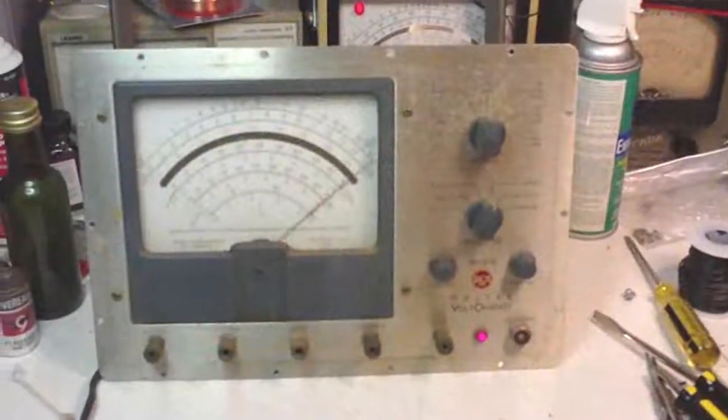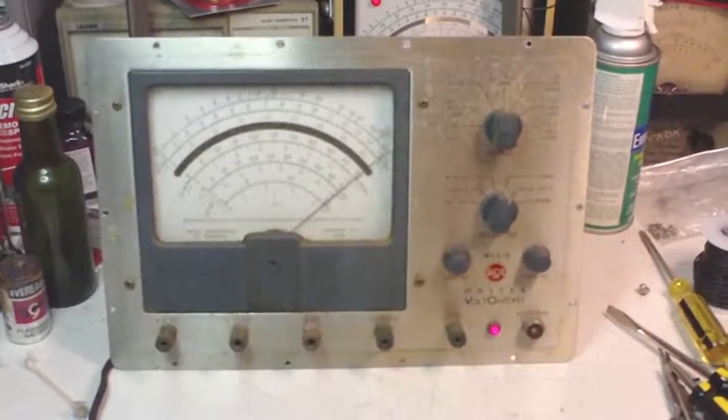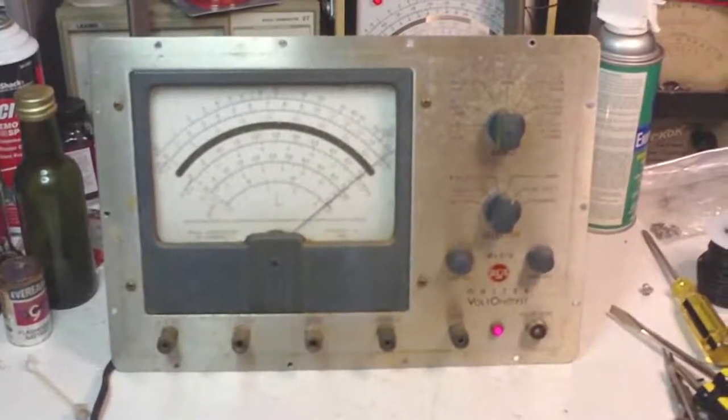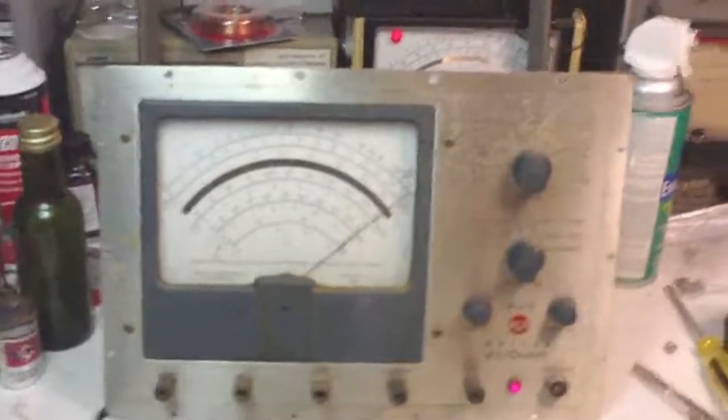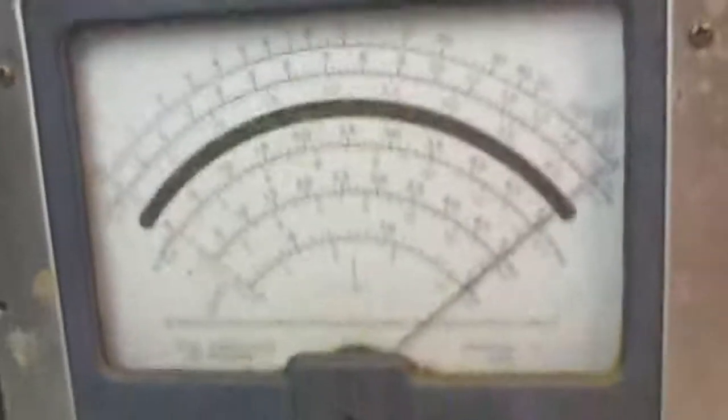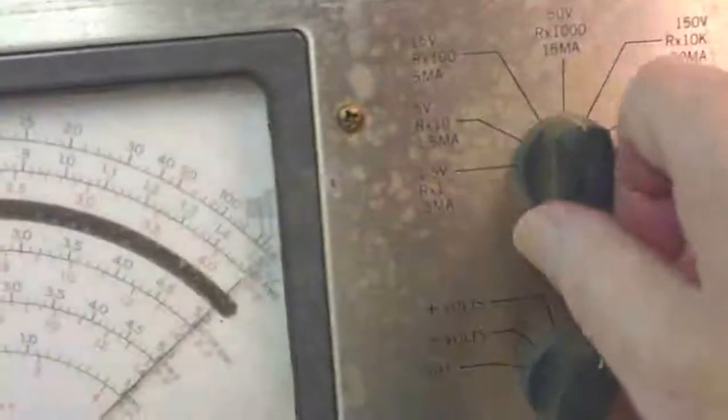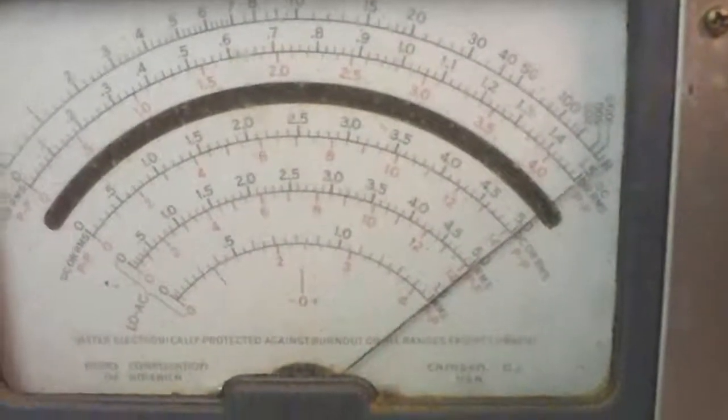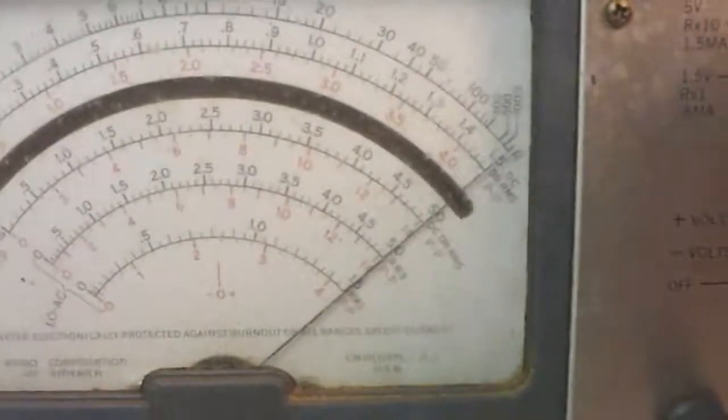I had this on the Variac on 100 volts for about an hour or so. Now it's on 120 volts and everything seems to be fine. Let's take a closer look here. That's the ranges. It's on ohms. And it doesn't move much which is a real good sign.